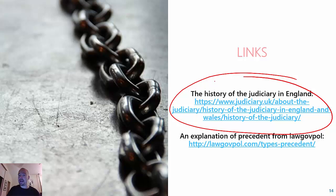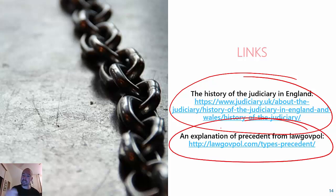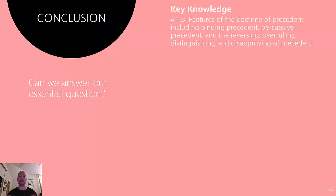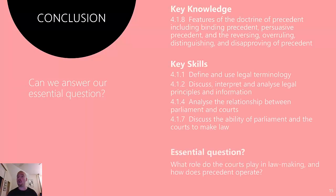There's a link to a nice little explanation of precedent — particularly binding and persuasive precedent — from LawGovPoll, a website with lots of different legal explanations. Ultimately, this should hopefully broaden and deepen your understanding of common law and the role courts may play in lawmaking, and particularly deepen your understanding of how precedent operates in the Australian legal system. Happy studying, and feel free to leave any feedback in the comments.